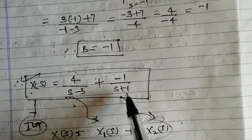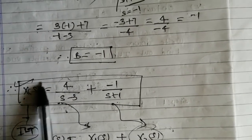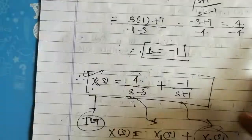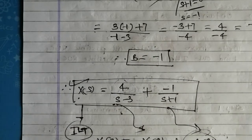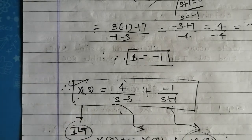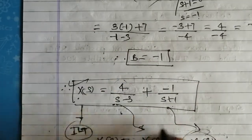So we obtain X(s) = 4/(s-3) - 1/(s+1), since A=4 and B=-1. Now we will apply the inverse Laplace transform over this X(s). In this method we obtained two factors; if there were three or four factors we would write A, B, C, D terms accordingly, find their values, and write back X(s) in that form.